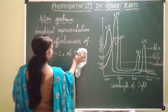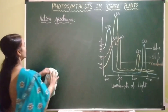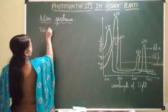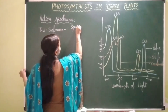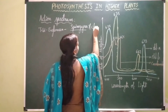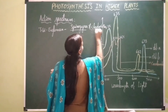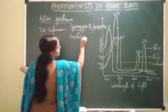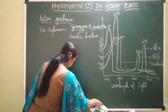T.W. Engelmann gave the first action spectrum by conducting experiments on filamentous green algae — spirogyra and cladophora. Along with spirogyra or cladophora, he also used aerobic bacteria while conducting his experiments.